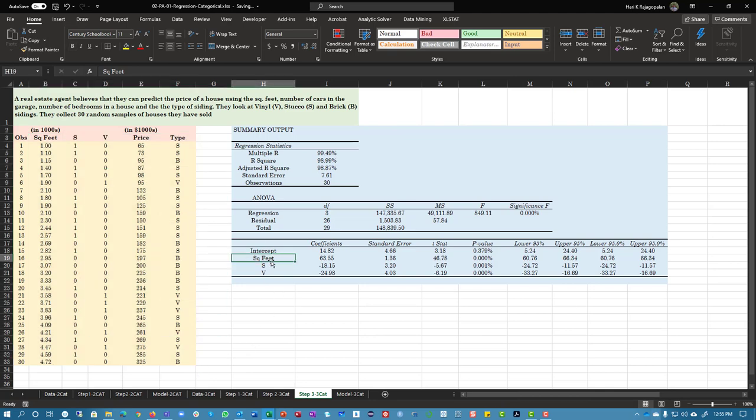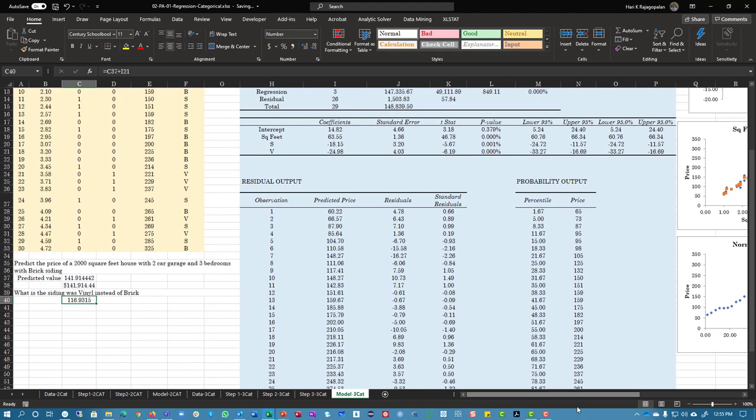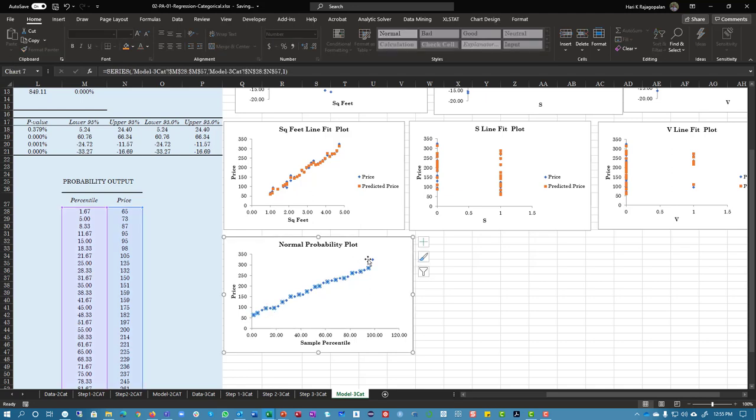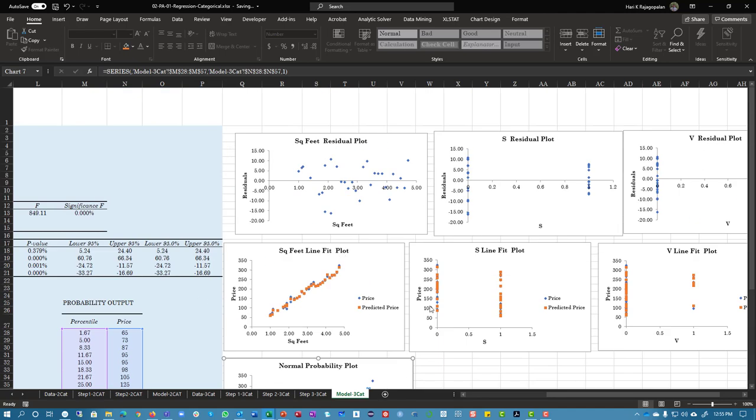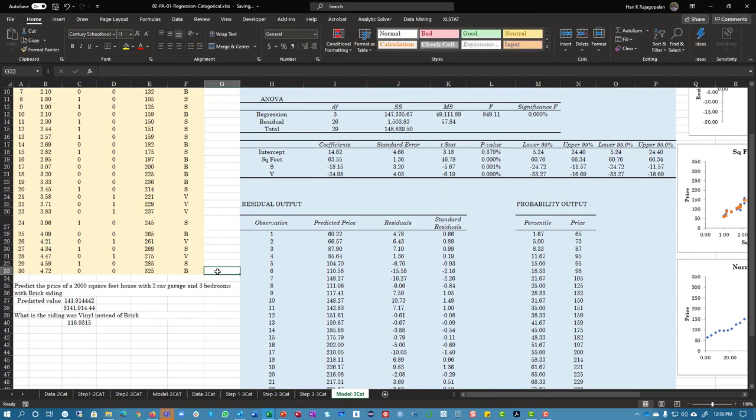And so we can say your square feet for every increase in square feet by a thousand. The coefficient is 63.55. This is the number of units it increases by. Your stucco is about 18.15 less than a brick house, and vinyl is 24.98 less than a vinyl house. So we can actually sit now and use this model for prediction. And here is the final model with the probability output. And this is almost a linear one, so we can kind of say this is normal. And here are the different variables which are showing on how they look at. The residual plots for square feet is both on both sides, so it's most likely okay. For binary variables, you are going to see plots like this, and that's okay.